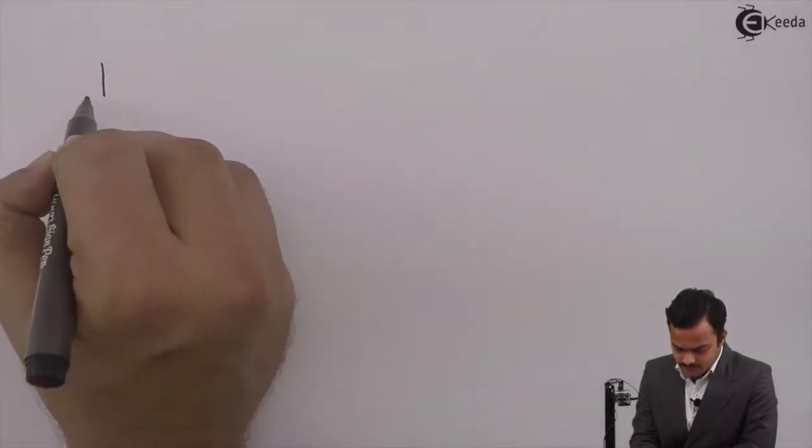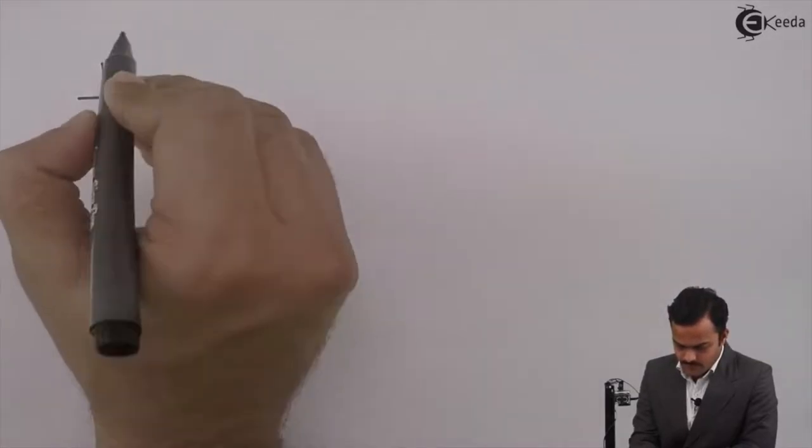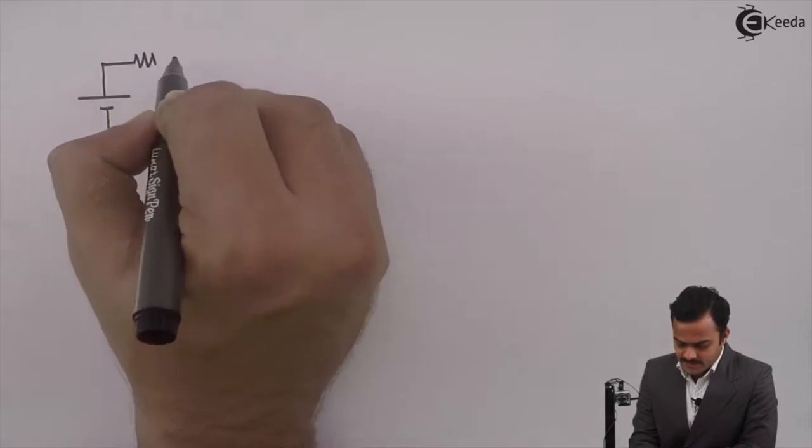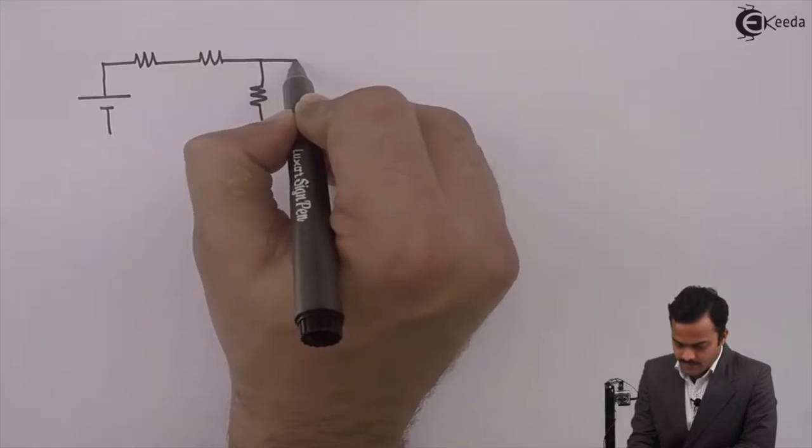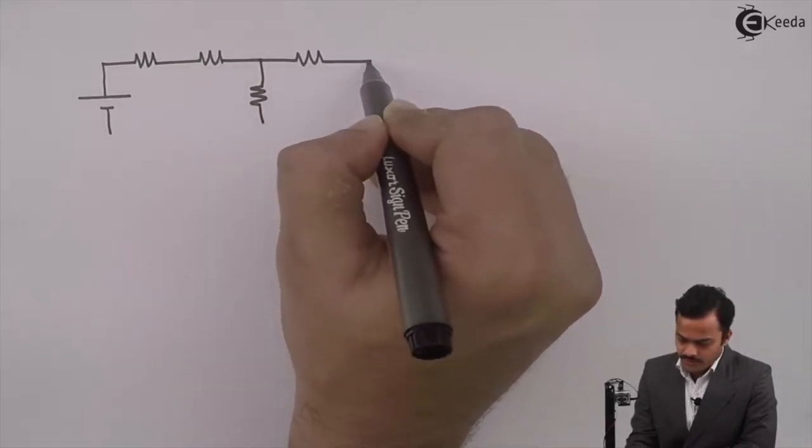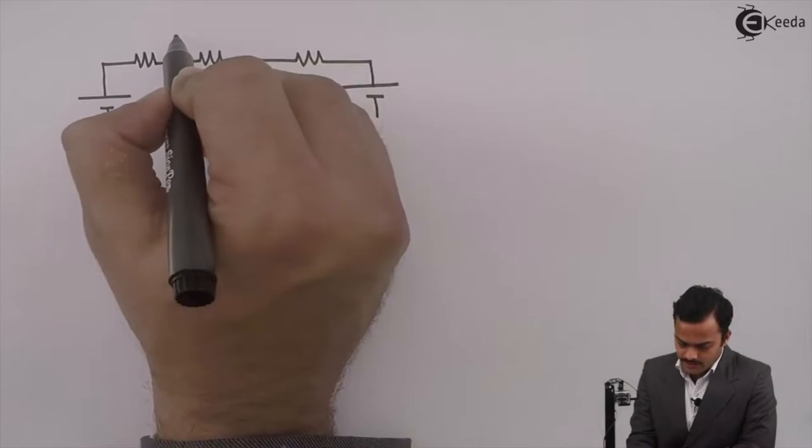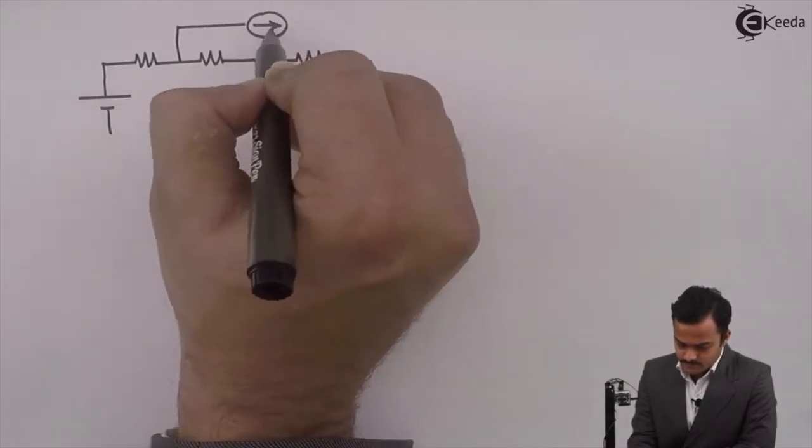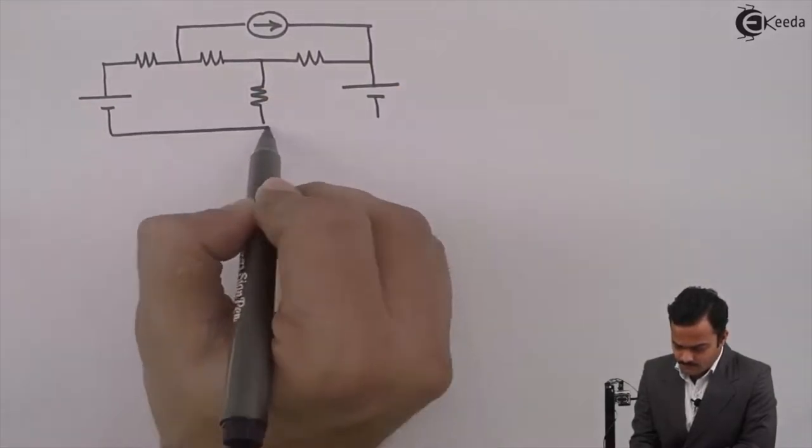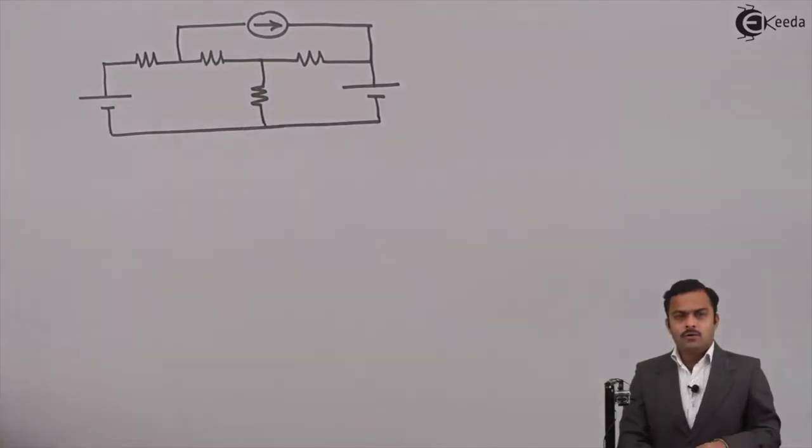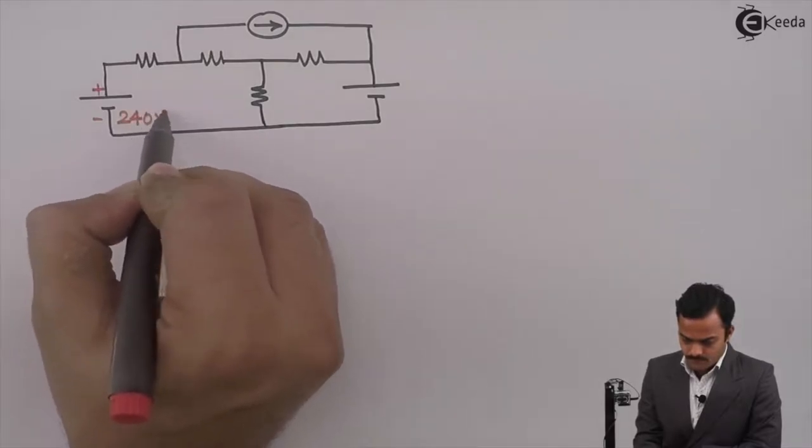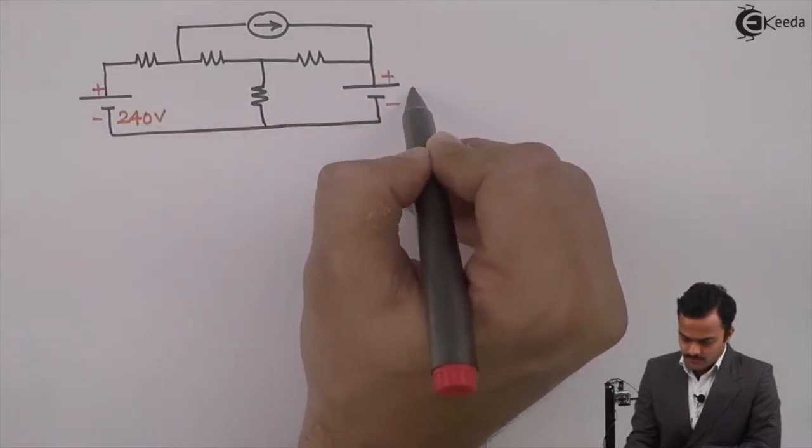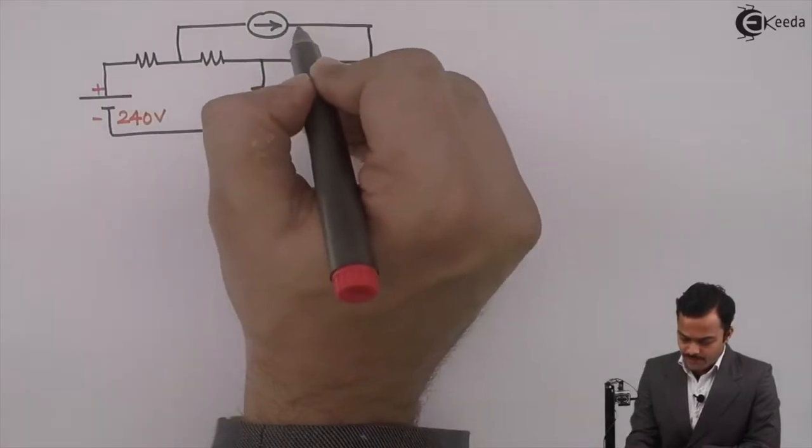In the circuit, I have a voltage source and resistances like this with one more voltage source and a current source. Voltage sources are 240 volt and 60 volt. Current source is 10 ampere.